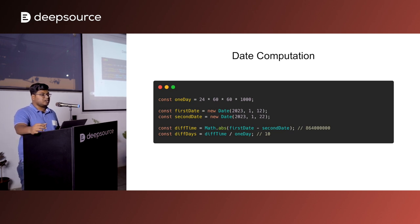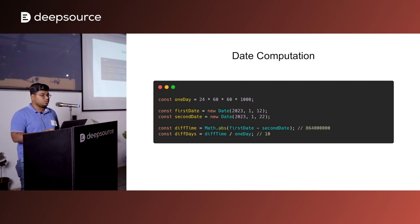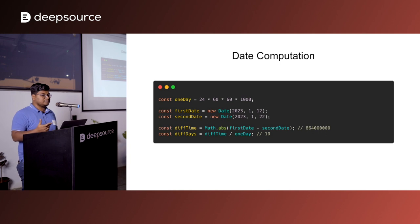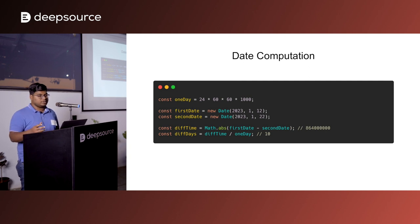Another source of difficulty is date computations. If you want to add or subtract a day, or count the difference between two dates, it's not straightforward with the current Date API. To find the difference between two dates, when you subtract them it doesn't directly return the difference in days — it returns the difference in milliseconds. To convert that into number of days, I have to divide it by the number of milliseconds in one day. So just to find the difference between two days requires multiple steps, and that's just one example.